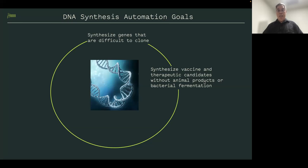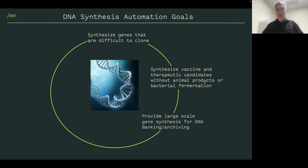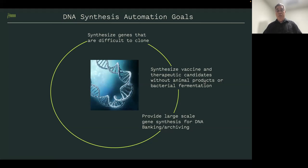It's also very expensive and limits the number of tests you can successfully run if you're constantly worried about contamination. To provide large-scale gene synthesis is important for two areas. One is DNA banking — NanoPeg provides materials and chips for the largest DNA bank in the world.